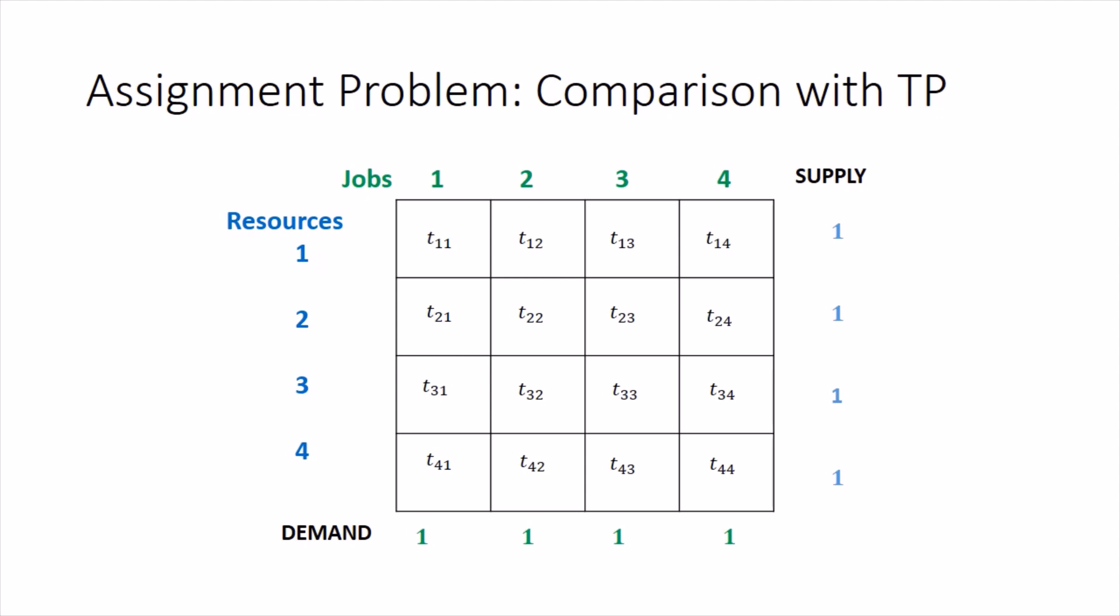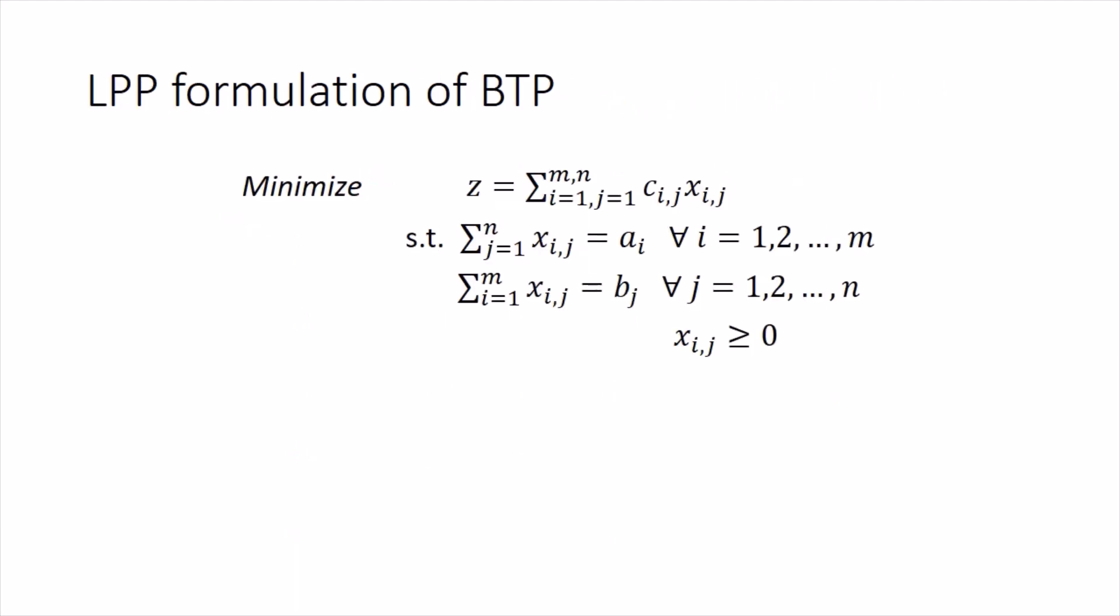They are never coming with the supply and demand information. Now it looks pretty like a transportation problem. If you recall what was the LPP formulation of a balanced transportation problem, then you will see this one where we were to minimize the cost of transportation and the constraints were equality constraints.